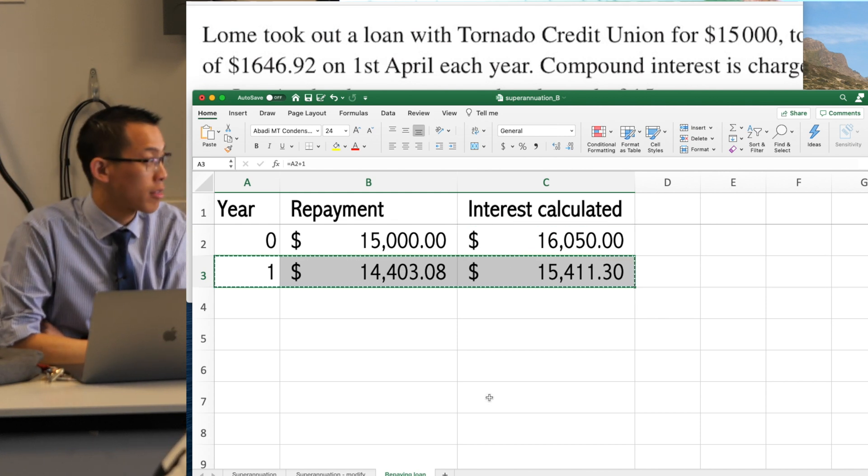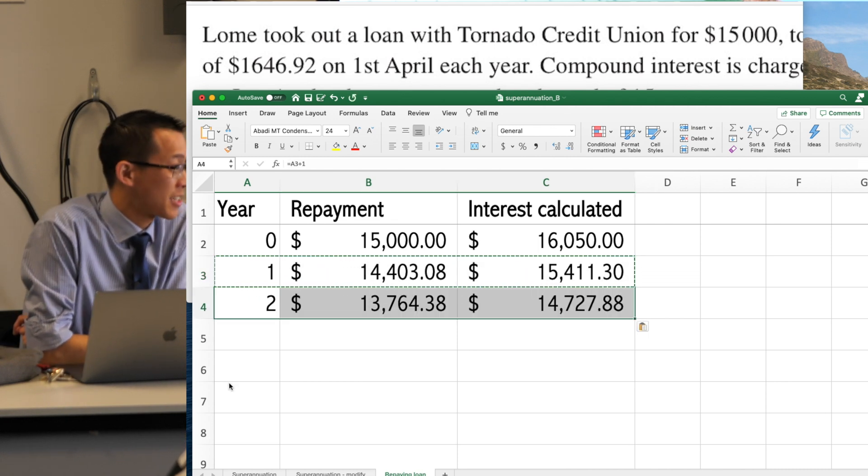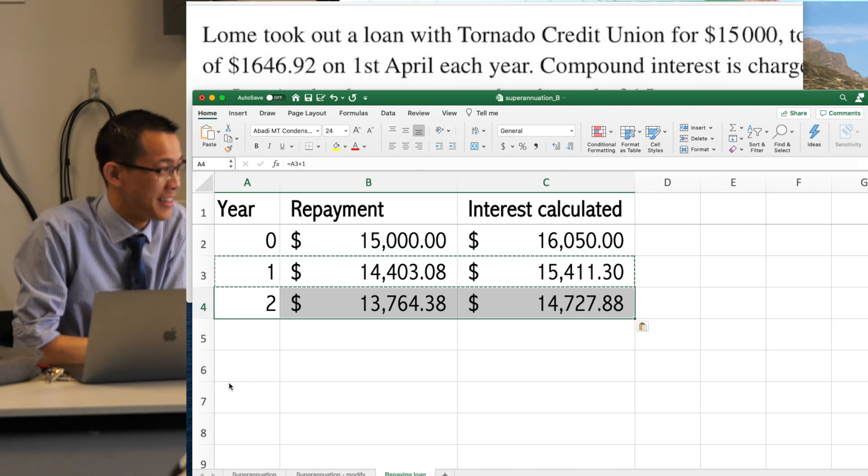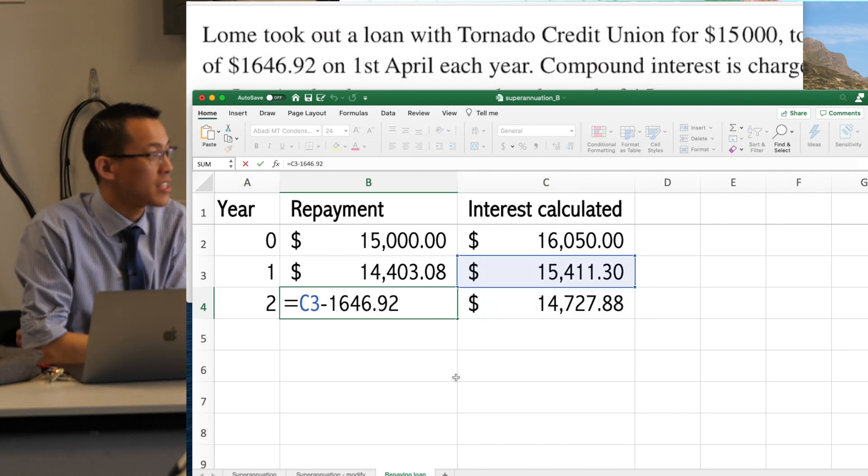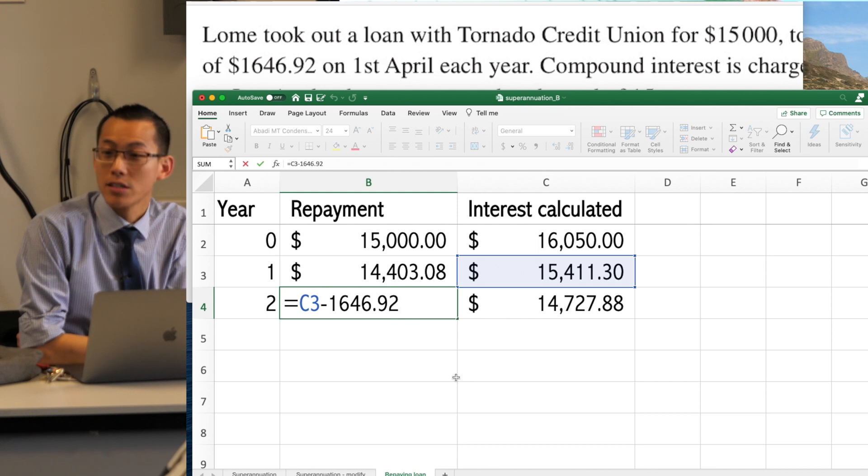I'm going to copy all three cells and I'm going to paste them down to the next row. You with me? Yeah. And yes, no, you've already got down to row 15. That's great. So you can just double check. This is the repayment.